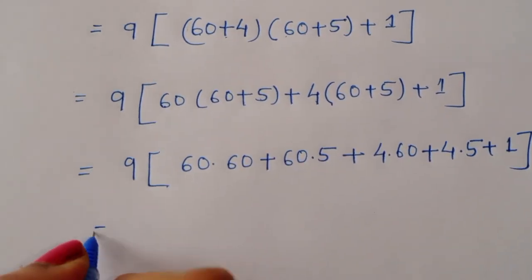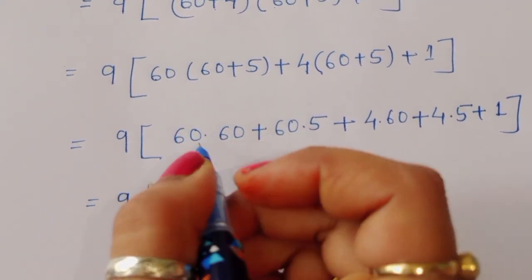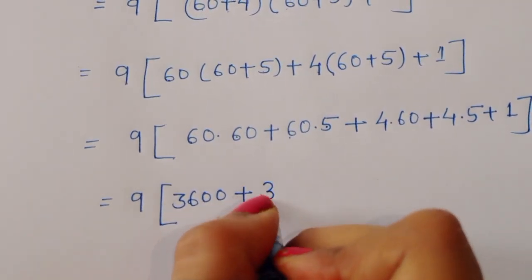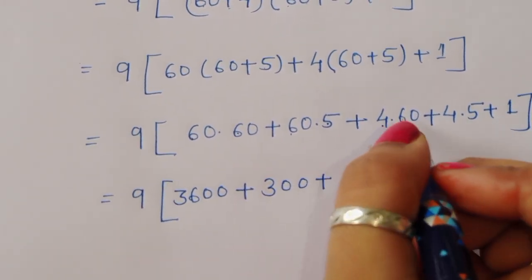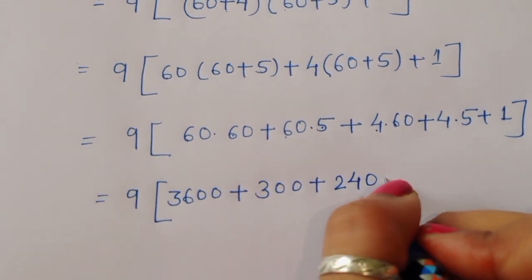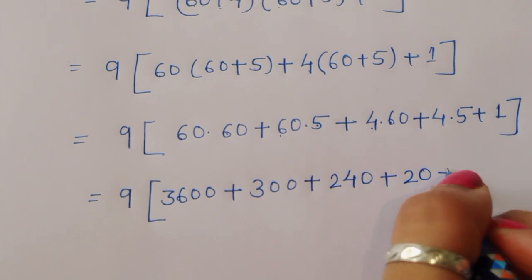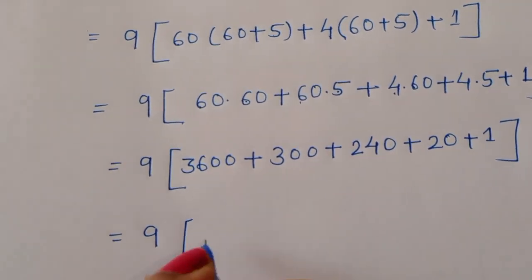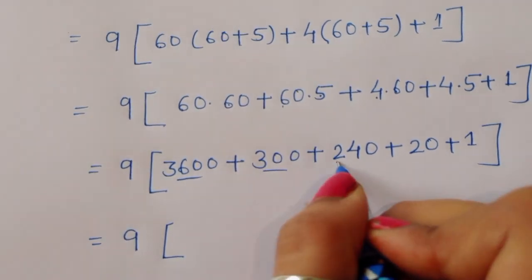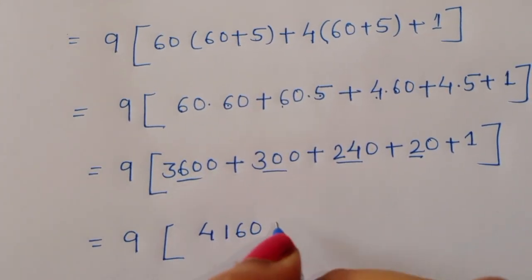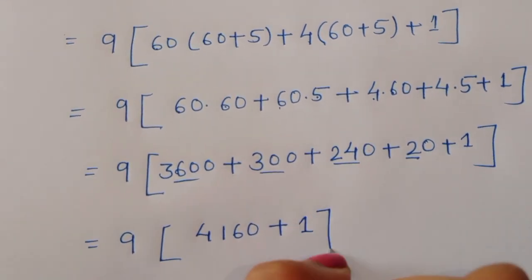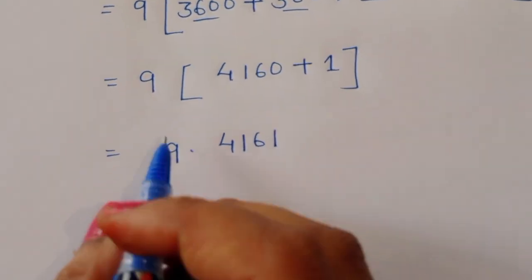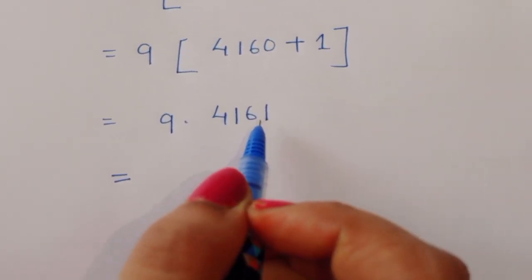Expanding: 60 times 60 is 3600, plus 60 times 5 is 300, plus 4 times 60 is 240, plus 4 times 5 is 20, plus 1. Adding all terms: 3600 plus 300 plus 240 plus 20 plus 1 equals 4161. So we have 9 times 4161.